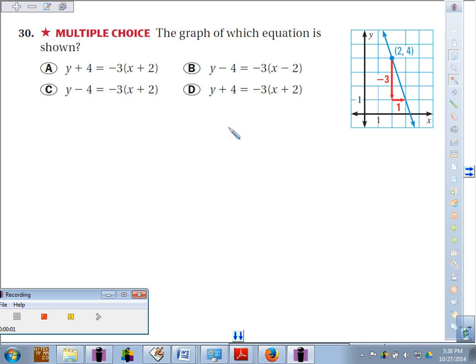Number 30, the graph of which equation is shown. Let's see, we use our point-slope form.